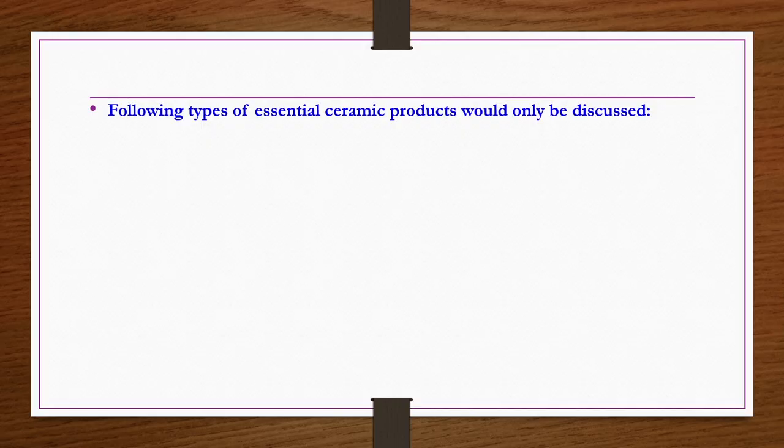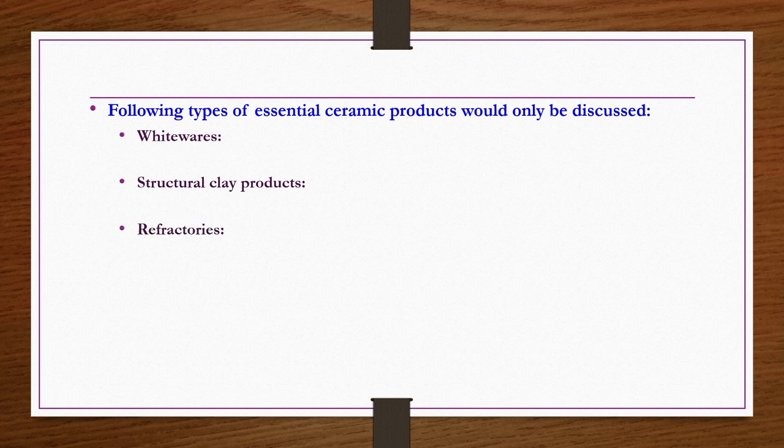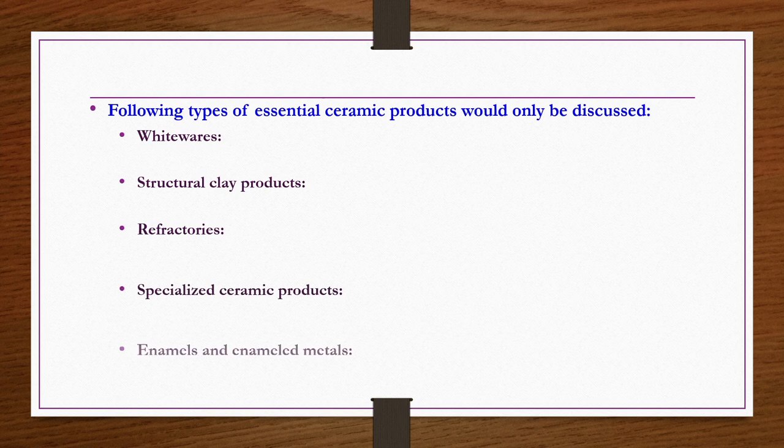The range of ceramic industry products is now broader and no longer very limited. We try to classify different types of ceramic products. Due to time limitations, the following five types of essential ceramic products will be discussed: whitewares, structural clay products, refractories, specialized ceramic products, and enamels and enameled metals. These five types will be discussed in detail from their manufacturing, applications, and uses point of view.